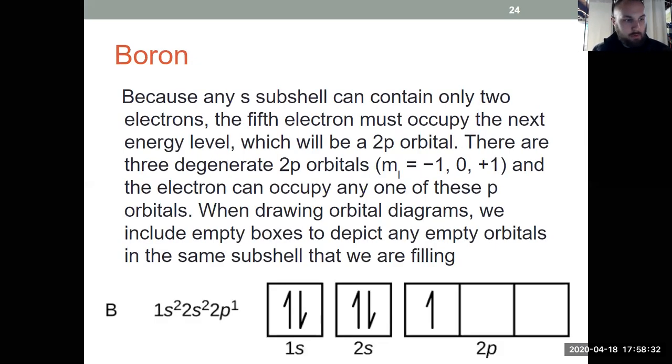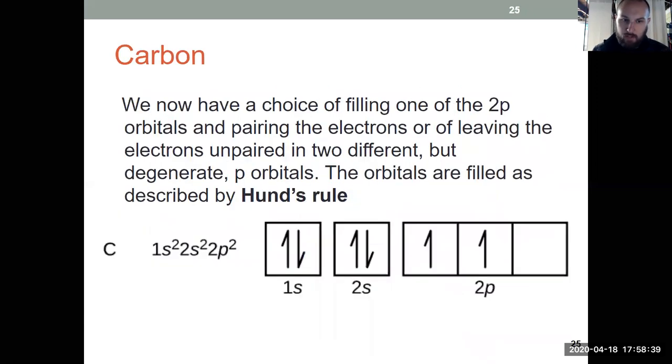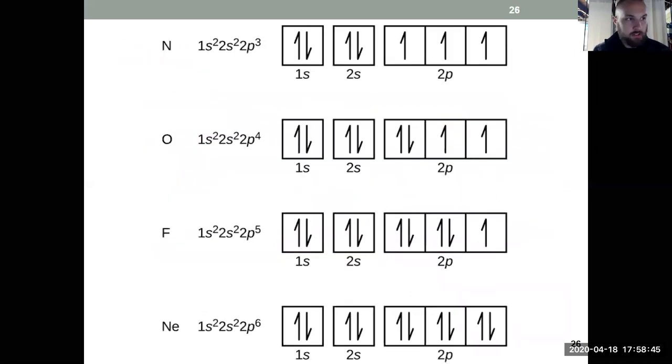Keeping in mind, we can never have the same set of four quantum numbers. And then when we got to boron, we went into the 2p orbital. But Hund's rule told us that we fill each one of the boxes as we go to carbon before we start to pair them up. So we go from boron to carbon to nitrogen. And then when we get to oxygen, they start to pair up with oxygen, fluorine, and neon yet again.